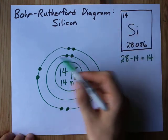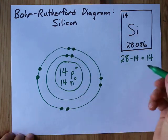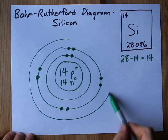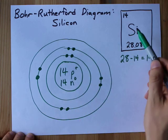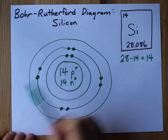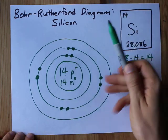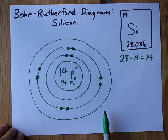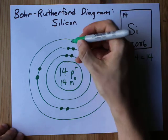But I need 14 and I've only put 10 dots so far. So I'm gonna need a third shell. Now as long as you're dealing with any element calcium or earlier, which this is, this is 20 or less, you can fit up to eight in the third shell. I only need four more so I'm just gonna put four more there.